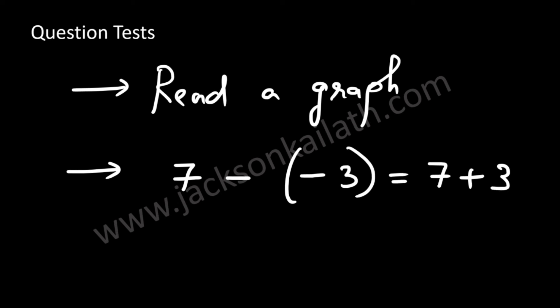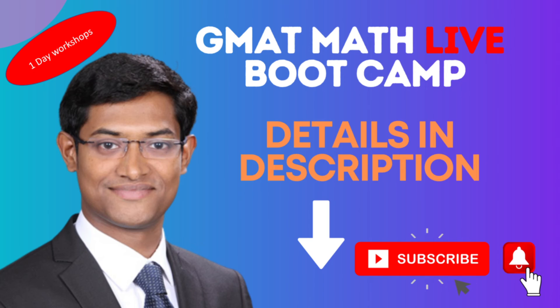You should know that minus of minus is plus. So 7 minus minus 3 is the same as 7 plus 3 — minus of minus becomes plus.